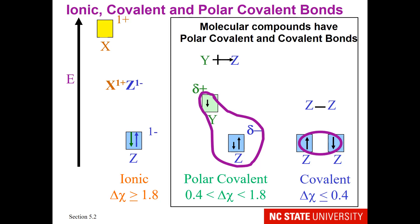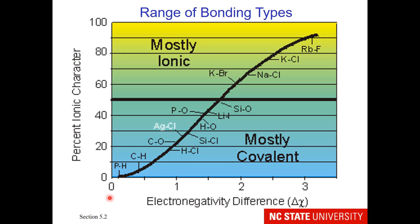Molecular compounds are those that have polar covalent and covalent bonds. Of course, bonding types come in a continuum, and the sorting boxes are just an easy way to refer to them.